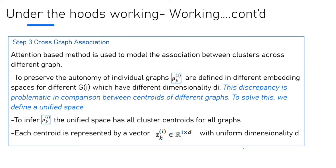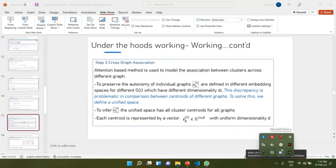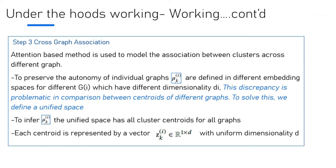Step three is about cross-graph association probability, which is an attention-based method. Earlier in the session, we talked about mu_KI being assumed. Now it's time we define that. To preserve the autonomy of individual graphs, mu_KI are defined in different embedding spaces for different G(i)s which have different dimensionality D_I. This is problematic in comparison between centroids of different graphs. To solve this, we define a unified space for all cluster centroids of all graphs, such that each centroid is represented by vector Z_K with uniform dimensionality D.